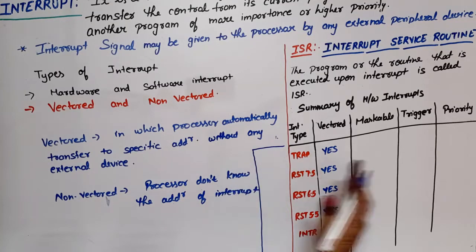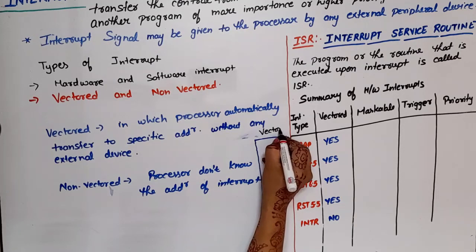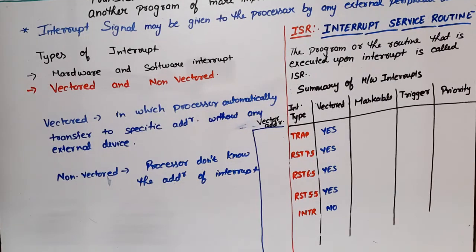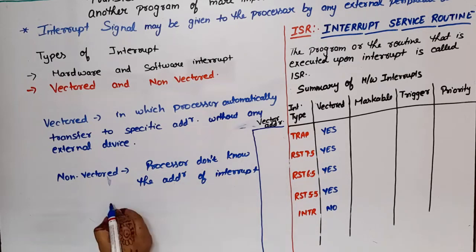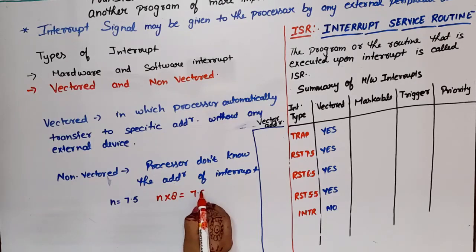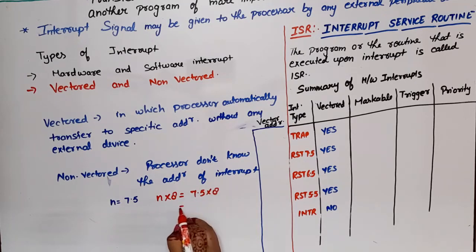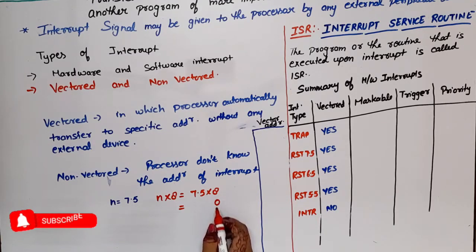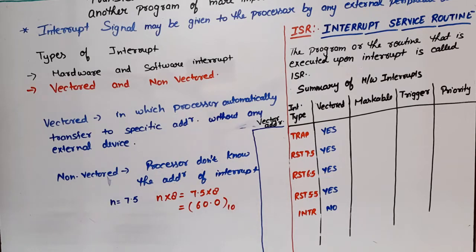I will tell you the vector address table and how to calculate the address. For example, RST 7.5: the formula is n × 8, so 7.5 × 8 = 60 in decimal. Converting 60 to hexadecimal: 60 ÷ 16 gives quotient 3 and remainder 12, which is C in hex. So the vector address for RST 7.5 is 003C.